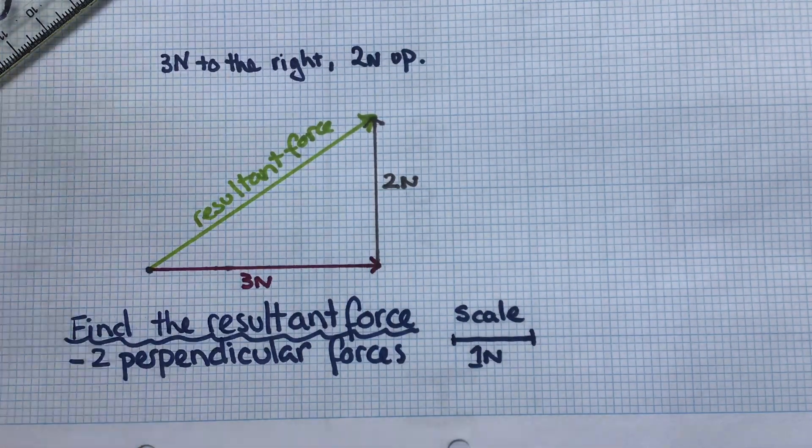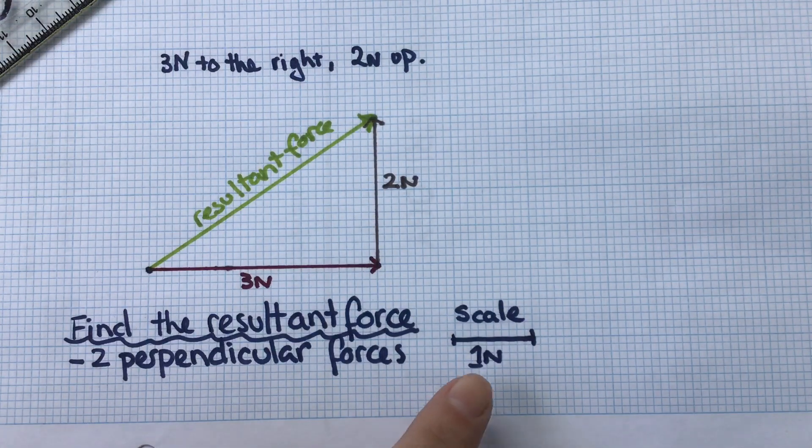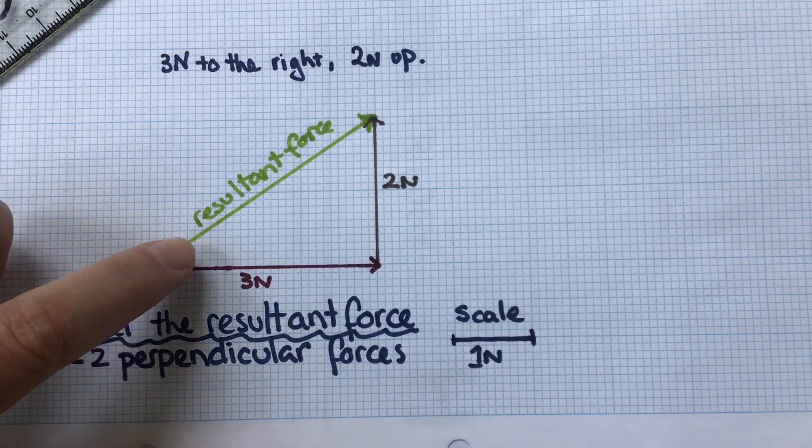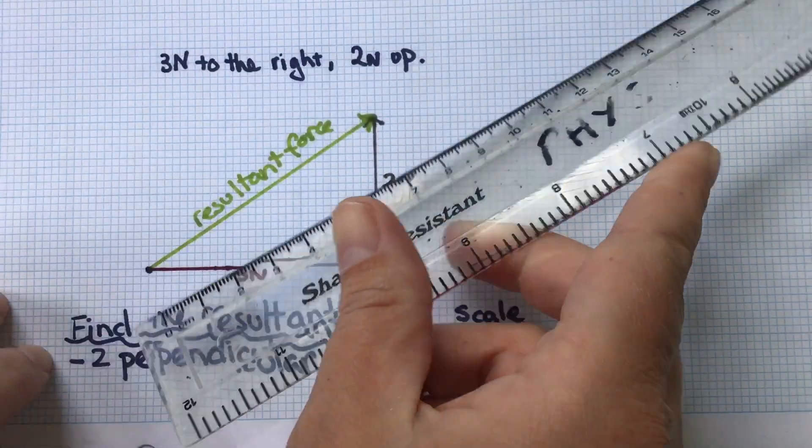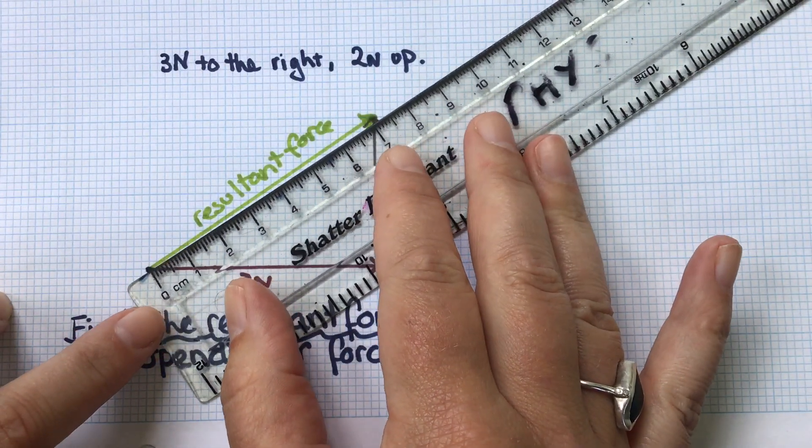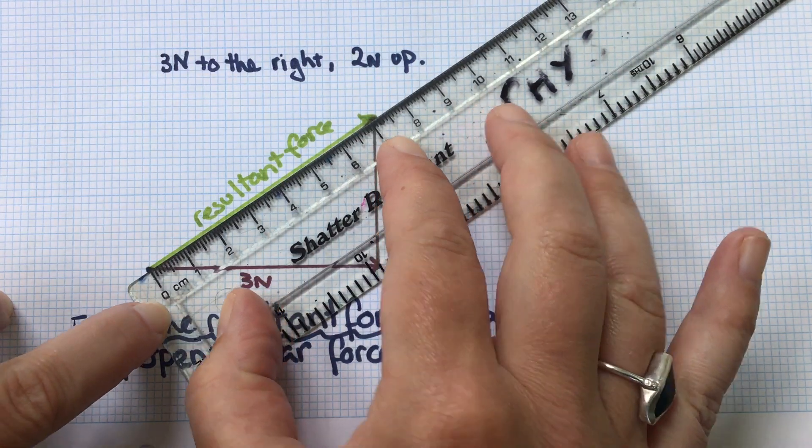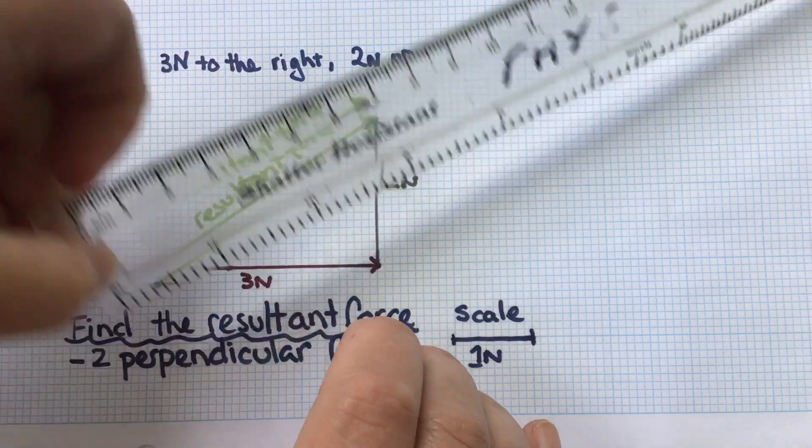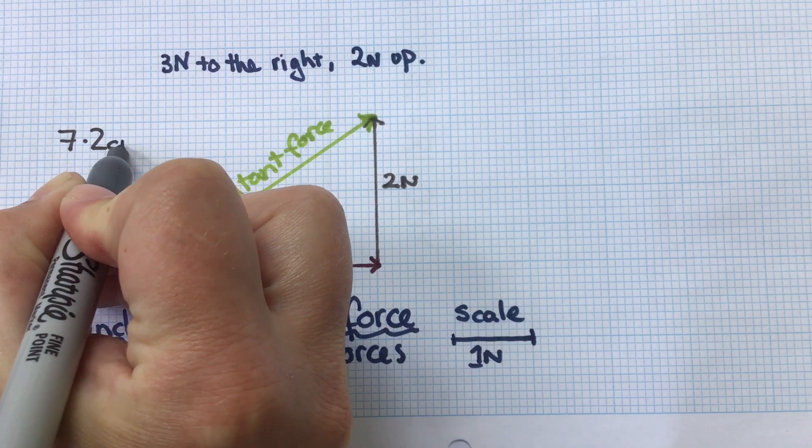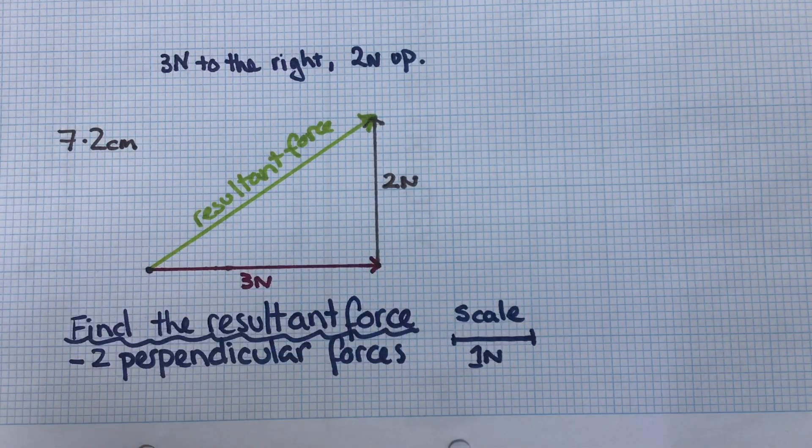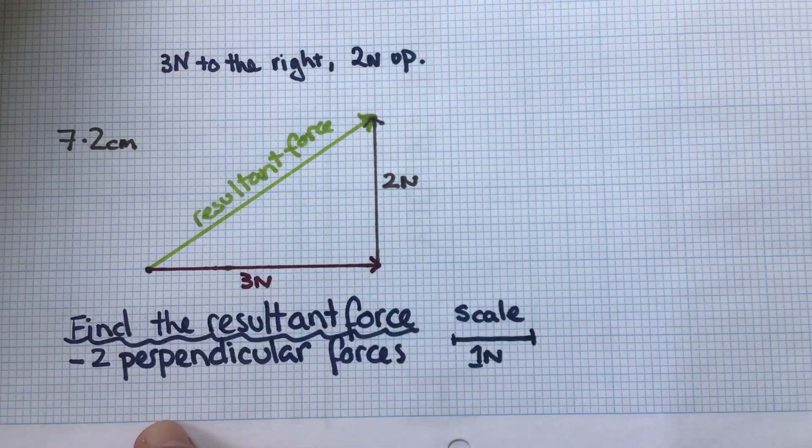I now need to measure the size of this resultant force and convert that into a magnitude using the scale, and then use a protractor to measure the direction. Let's measure the size of it first. So I think I'm looking at 7.2 centimeters. Now that's not my answer—that's the length of the arrow. I now need to convert that using the scale.